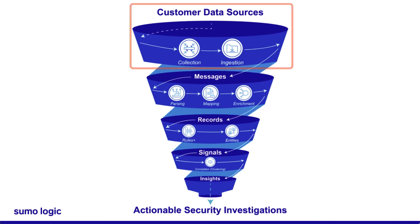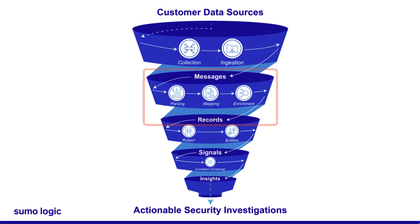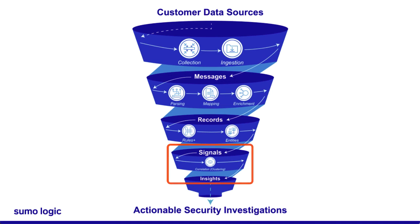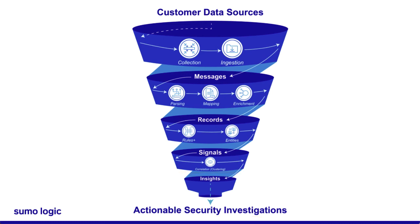To summarize: Sumo Logic collects and ingests log messages from your company's apps. Those messages are parsed, mapped, and enriched into records. CSE compares those records to rules, and if there's a match, it extracts the entity, assigns a severity, and creates a signal. Then, if enough signals with the same entity cluster together and their total severity scores pass the activity score threshold, an insight is created. And once you have an insight, that's when the real investigation begins.